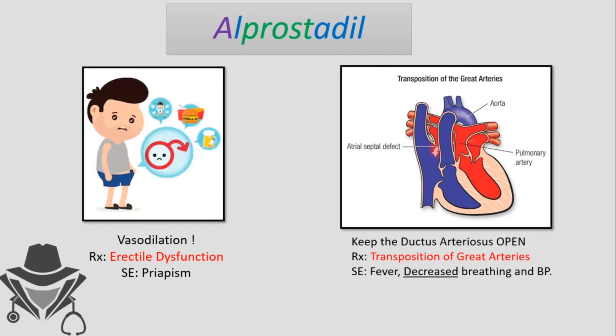Alprostadil is used in the management of transposition of the great arteries. Side effects include fever, decreased breathing, and decreased blood pressure. Fever occurs because prostaglandin E1 acts on the hypothalamus to change the temperature set point. Decreased breathing is caused by bronchodilation and decreased blood pressure by vasodilation.